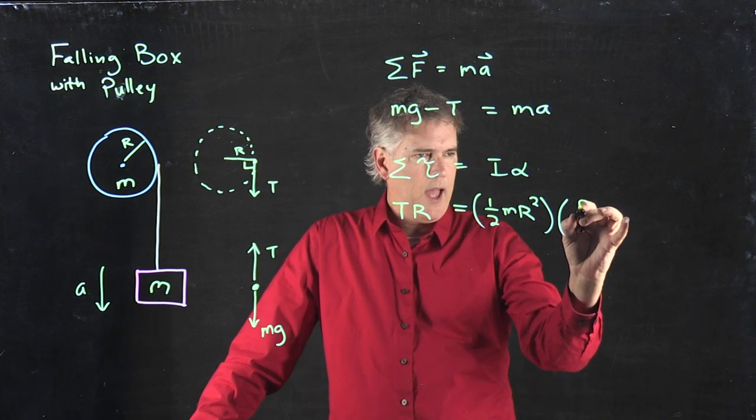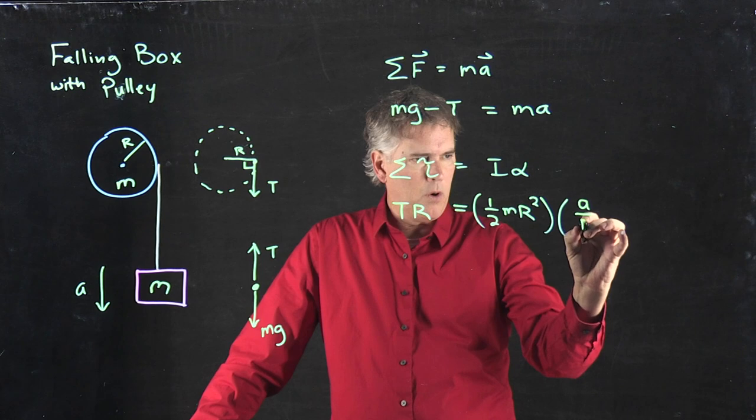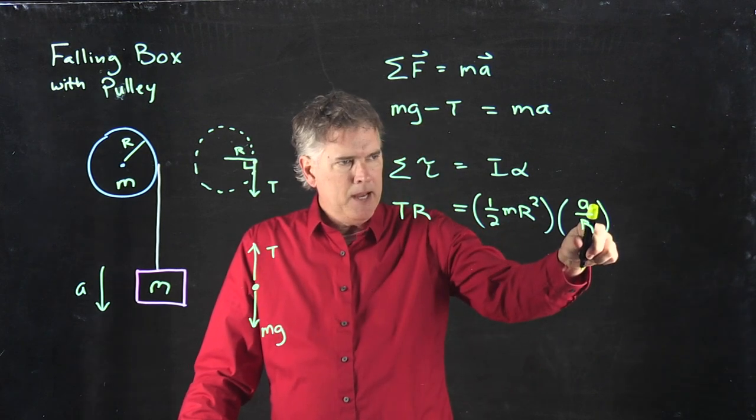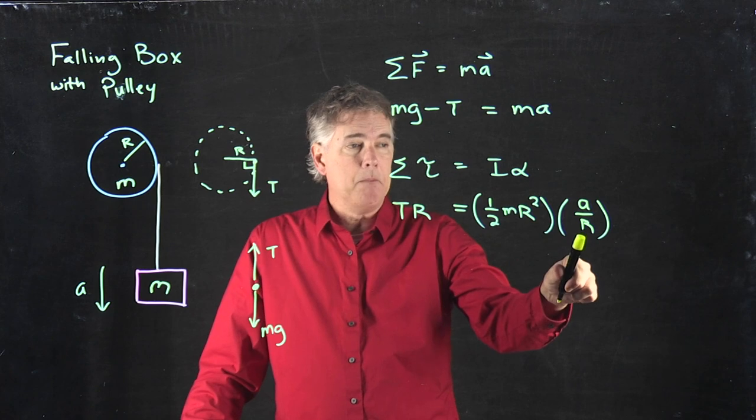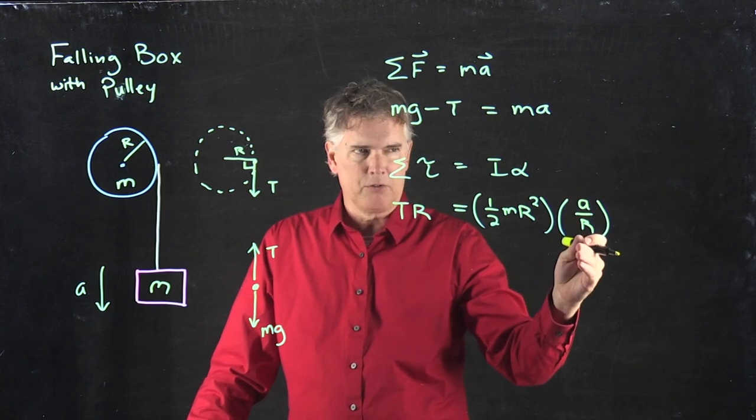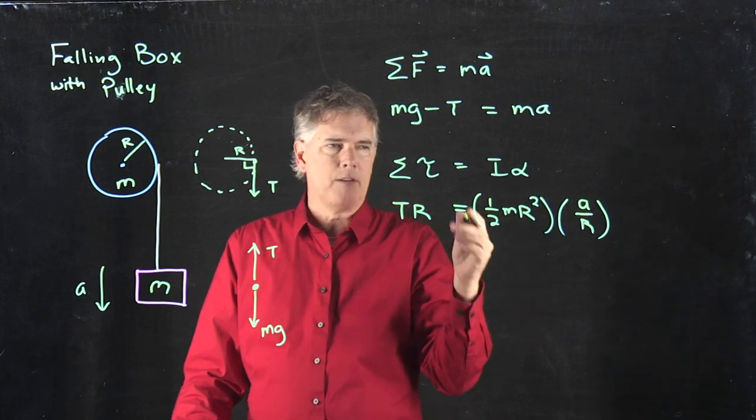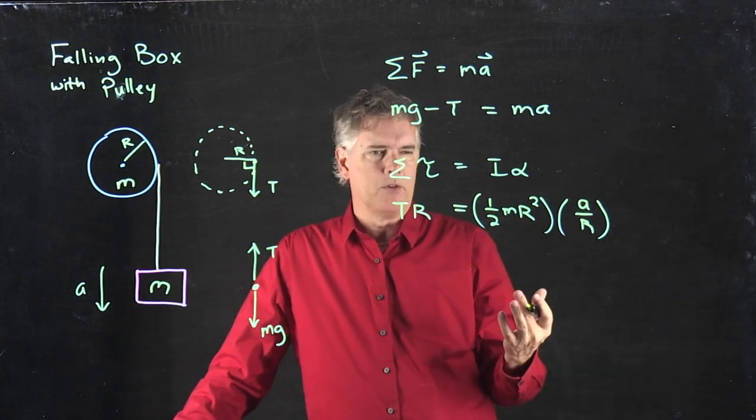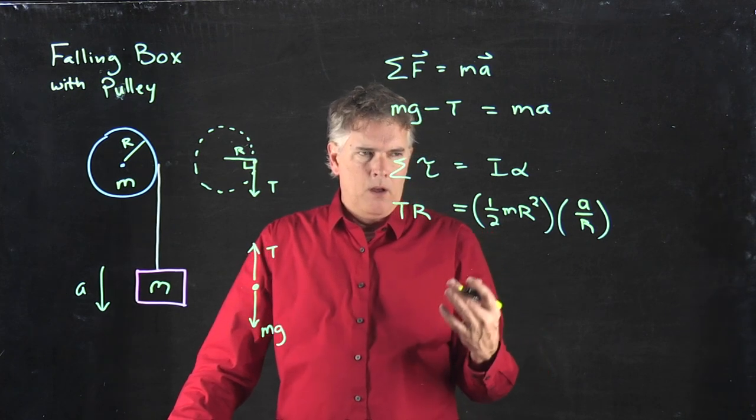So if I do A over R, then I have meters per second squared up there. I get meters there. So the meters cancel out. And I get per second squared, which is what alpha is. Alpha is radians per second squared. Radians is unitless.